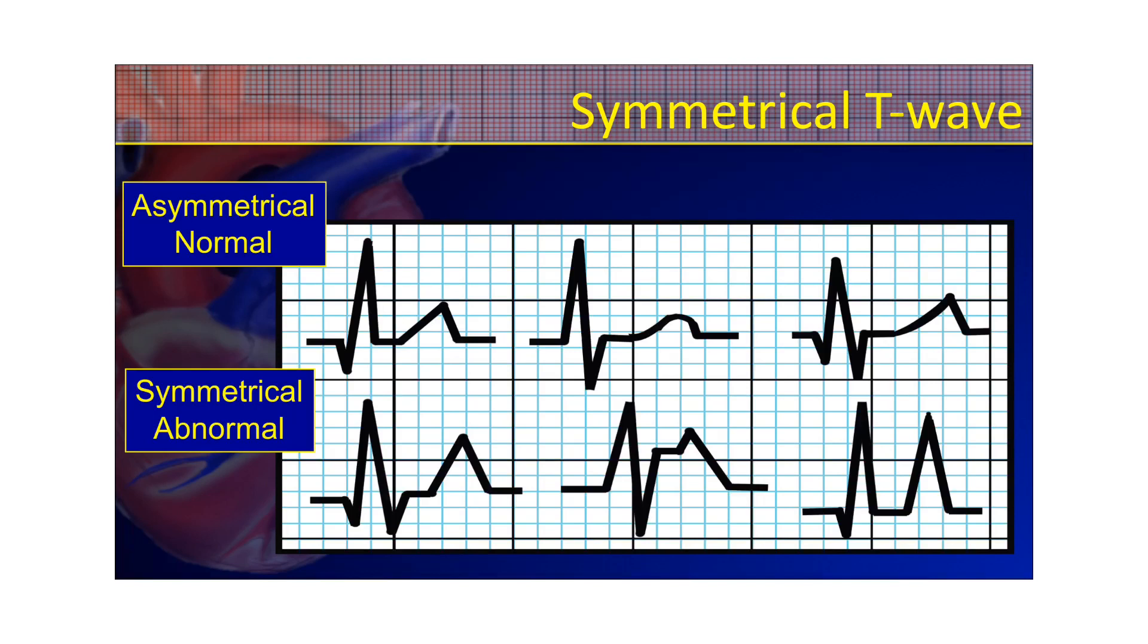So here again, remember asymmetrical is more normal. Symmetrical T-waves, if I drew a line down from the peak of these, they'd all be mirrored. So this one where you have that ST elevation, you're going to want to continue that down. They'd all be mirrored or you'd be able to create an isosceles triangle by closing off the bottom of them. So those are all some sort of pathological T-wave.